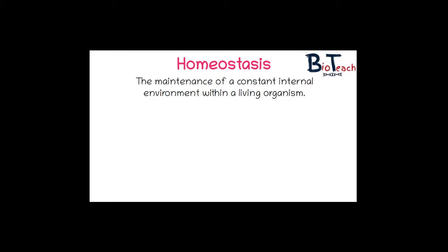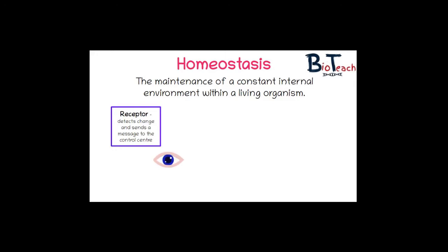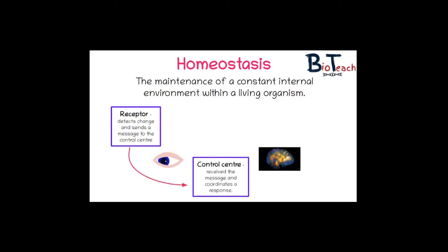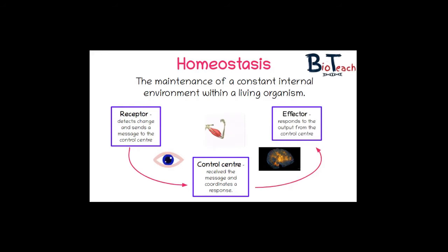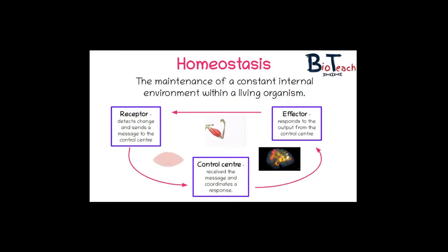Deviations from those strict limits can be quite harmful to that organism. In terms of detection, we've got various receptors as part of our nervous system — for example, the eye as a receptor. The receptor detects changes and sends messages to the control centre, which is usually part of our brain. The control centre will receive the message and coordinate a response, communicating with the effector, which could be a muscle or a gland. The message is received by the effector, creating an output, and that system keeps going around and maintains that homeostatic balance.